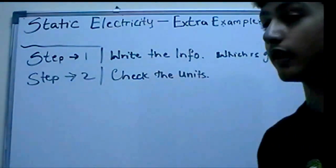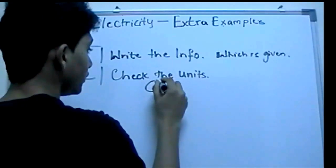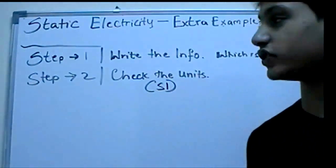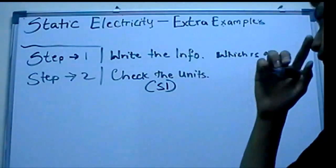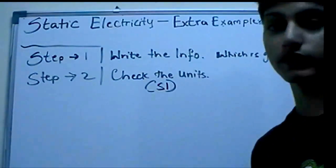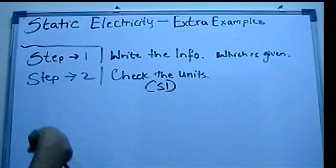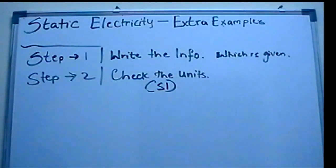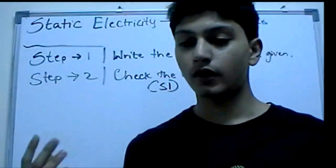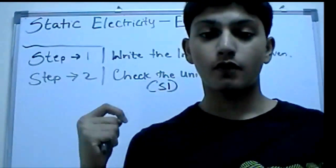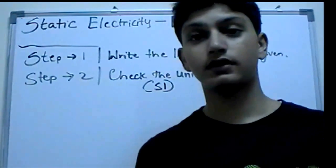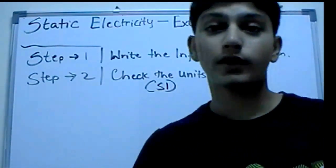If the units aren't SI units — for example, if the distance is given in inches, yards, or centimeters — what you need to do is convert it into meters. Meter is the SI unit in physics. Check the units before you put them into your equations and convert them if needed. Teachers will often convert units and give them to you, so you need to reverse that process and convert back into SI units.